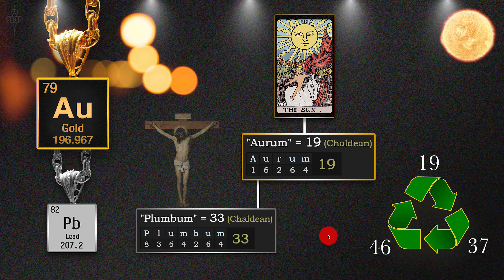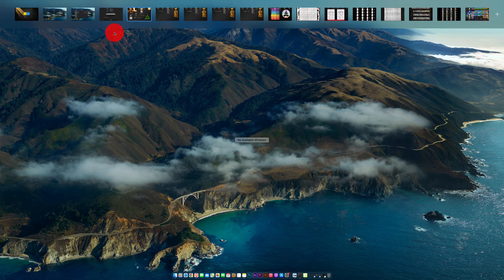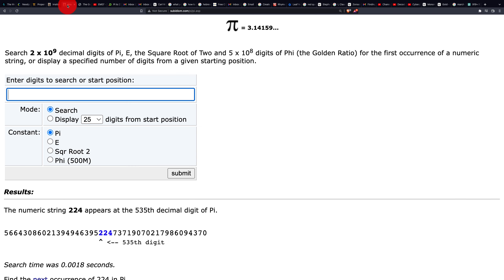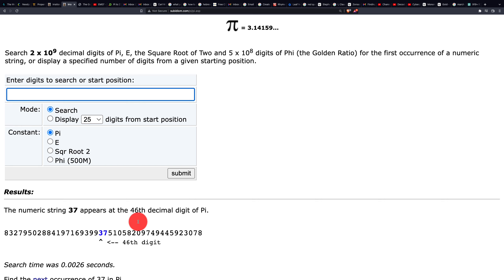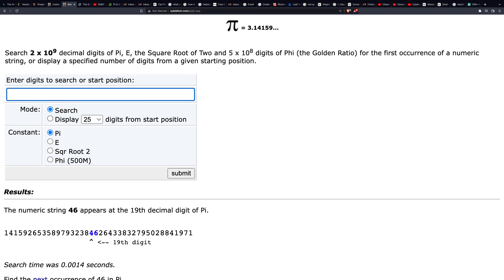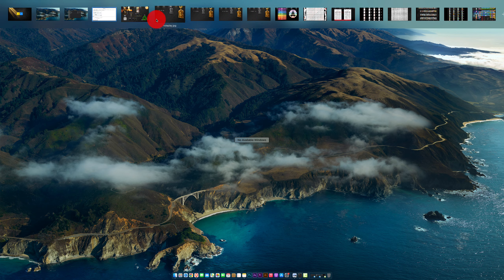I found this anomaly a couple of years ago: 19, 37, 46, which is found in the string of pi. Take 19 — it's found at the 37th decimal digit. Then take 37 — it's found at the 46th decimal digit. Then take 46 and we go right back to 19. This is the only anomaly I've ever found in the string of pi. Is this the recycle bin? We're living in a scripted reality.